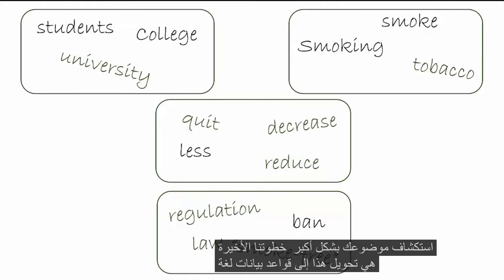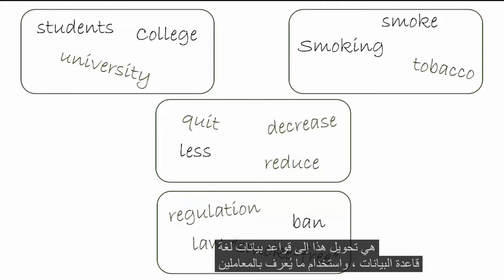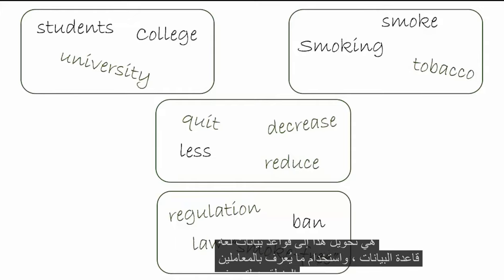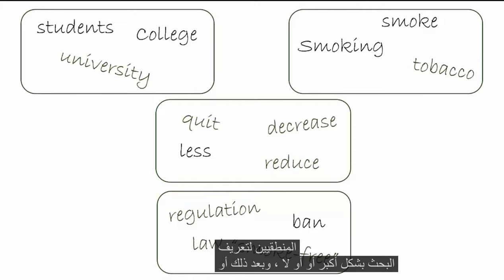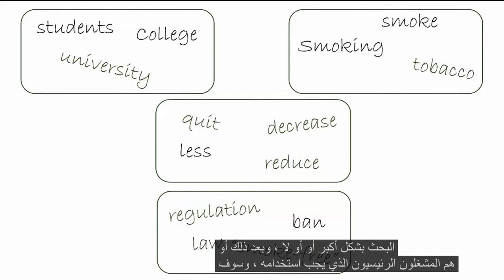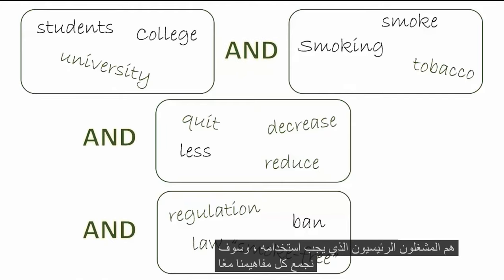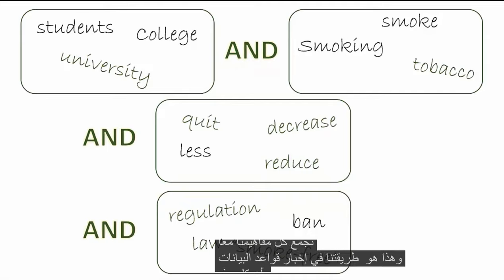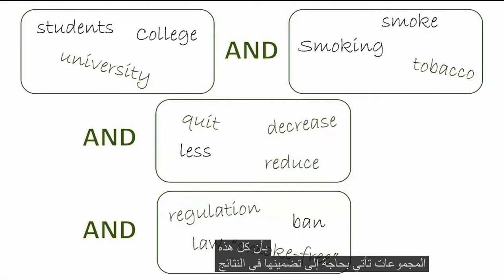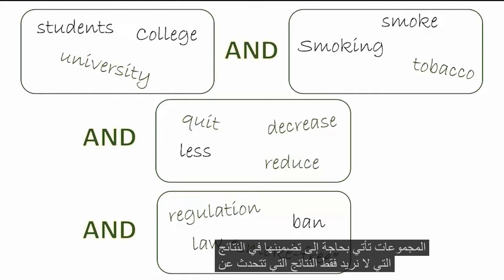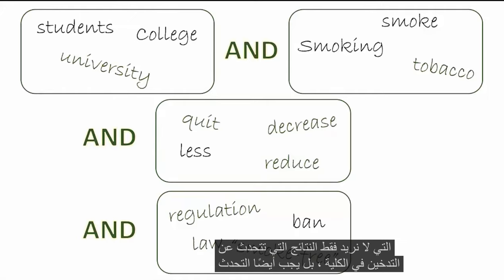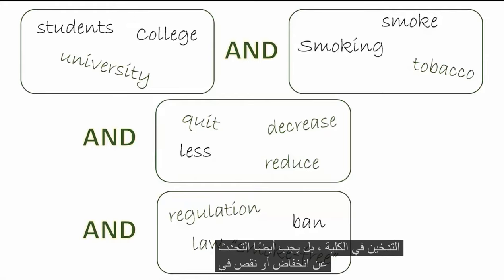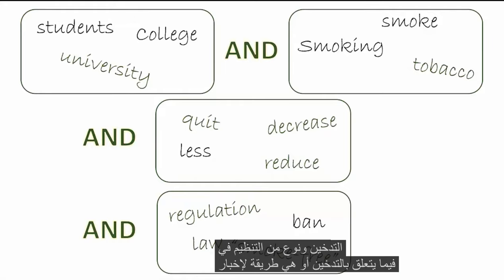Our last step is to turn this into database language. Databases use what is known as Boolean operators to further define a search — these are AND, OR, and NOT. AND and OR are the key operators to use. AND is going to combine all of our concepts together, telling the databases that all of these concepts need to be included in the results. We don't just want results talking about smoking in college — it also has to talk about a decrease or lack thereof in smoking and some sort of regulation in regards to smoking.